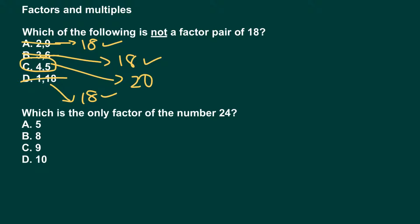The next question is: which is the only factor of the number twenty-four? Does twenty-four come up in the fives tables? Five, ten, fifteen, twenty, twenty-five, thirty — no, twenty-four does not come up in the fives, so five cannot be a factor of twenty-four. Next is eight: eight, sixteen, twenty-four — yes, eight is a factor of twenty-four, since eight times three gives us twenty-four. For nine: nine, eighteen, twenty-seven — twenty-four does not come up, so nine cannot be a factor. And for ten: ten, twenty, thirty — twenty-four does not come up in the tens, so ten cannot be a factor of twenty-four either.